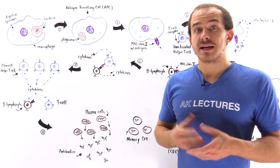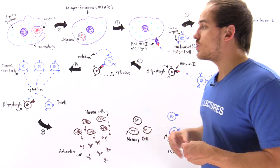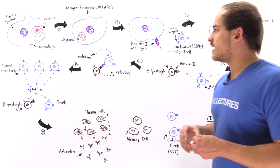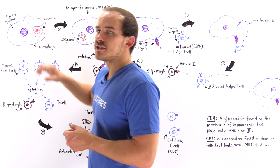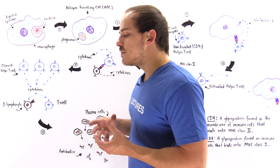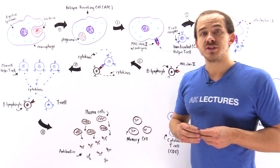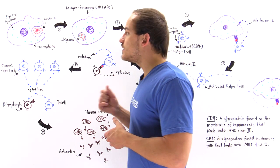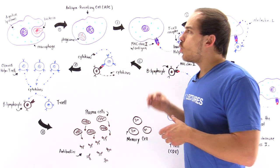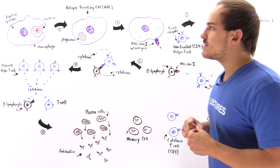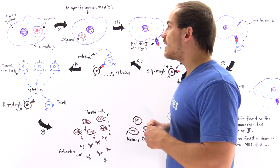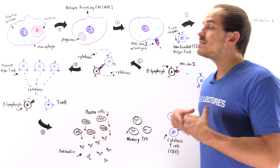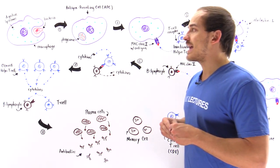To gain a better understanding of how our immune system actually works, let's take a look at the following illustration. So let's begin on this side. Let's suppose some type of infection actually took place and a bacterial cell got into our tissue. Once the bacterial cell is inside the tissue of our body, infection begins and the innate immune system is the first one to actually react.